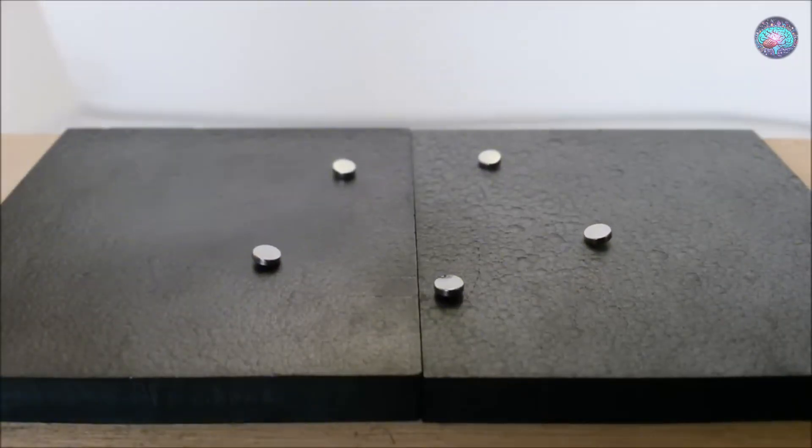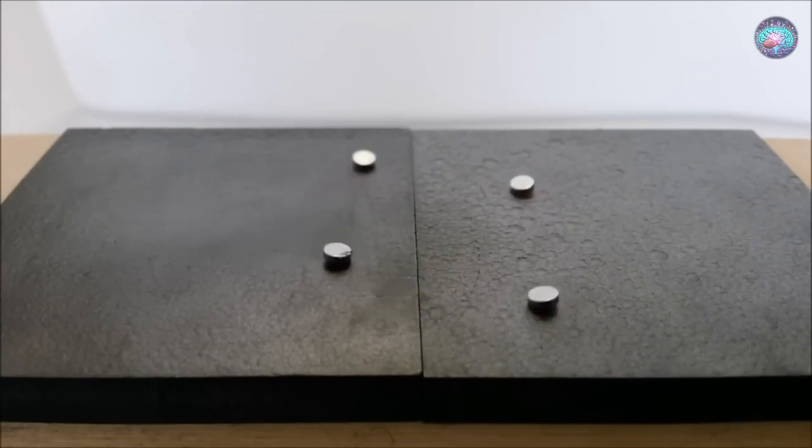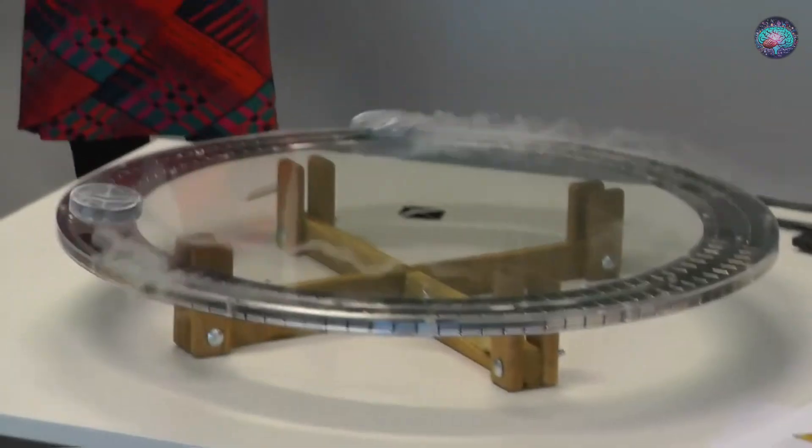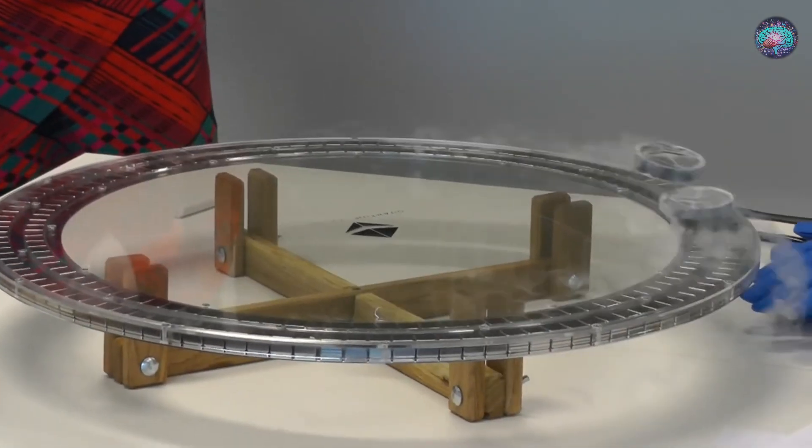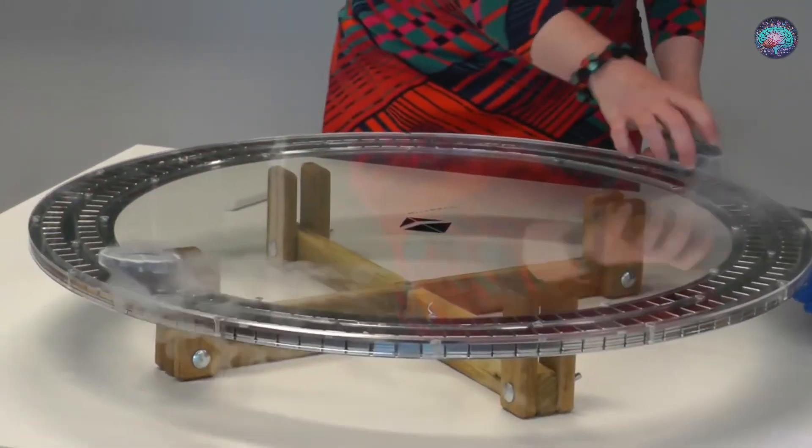However, the biggest obstacle to applying quantum levitation is finding superconducting materials that can operate at high temperatures. The first discovered superconductor was mercury, which functions at a temperature of just over 4K, around minus 269 degrees Celsius.